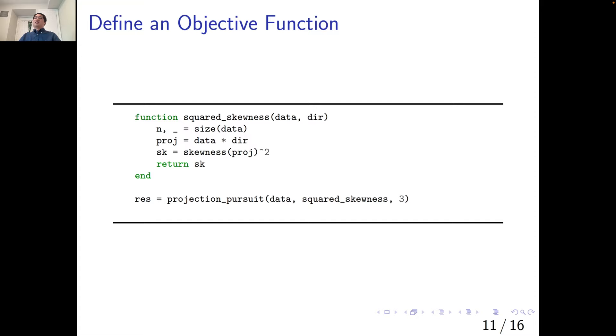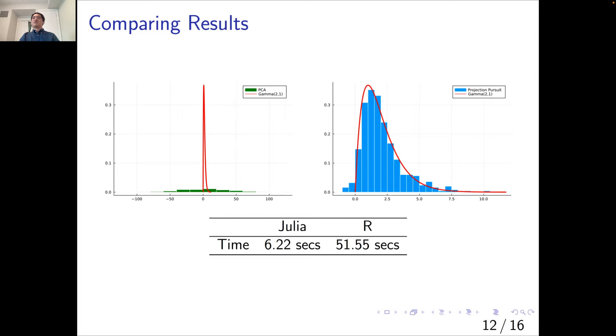PCA does not have any flexibility, and will just do the dimension reduction blindly, but we can feed our objective function to the projection pursuit, as well as telling it that we want to output three dimensions. Let's compare the first dimensions from both methods and compare it to the true skewed component in the original data. On the right, we almost successfully recover the gamma 2,1 distribution, although there are some negative values due to randomness, but I'm happy with the results. On the left, we can see that the first principal component is just a total miss to the gamma 2,1 distribution.